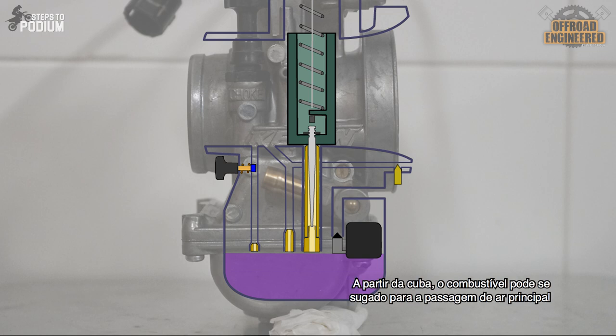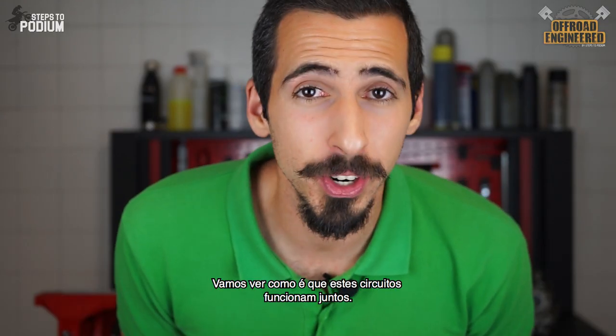From the float bowl the fuel can be sucked into the main air passage through three different feeding circuits: the choke circuit, the idle circuit, and the main circuit. Let's see how all these circuits work together.